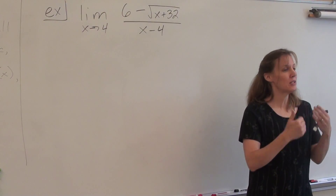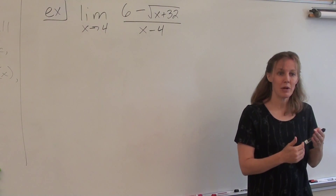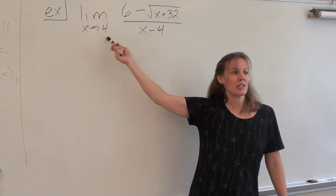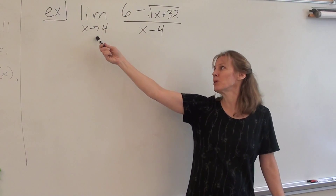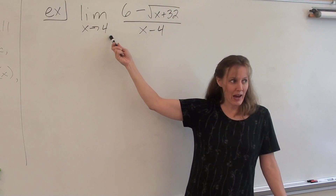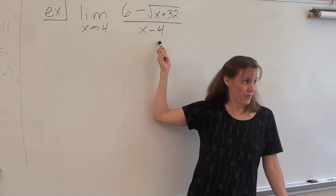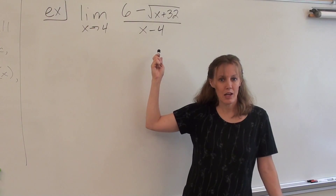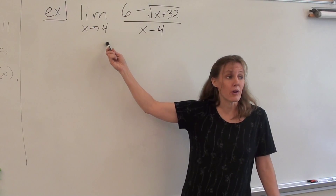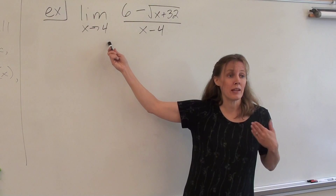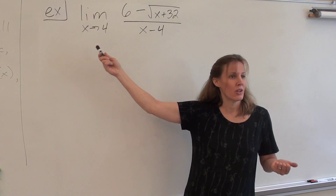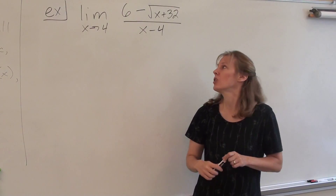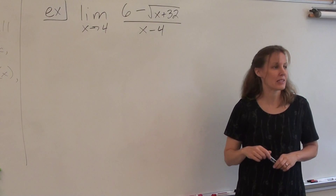Because you get zero over zero, there's a common factor top and bottom, and you're getting zero when you plug in 4. I'm just going to give you a hint: if it's x approaches 4, that common factor you're looking for is x minus 4. If it was x approaches 6, the common factor would be x minus 6. If it was x approaches 0, the common factor would just be x. It's whatever you're approaching — that gives you the hint of the factor you're looking for.